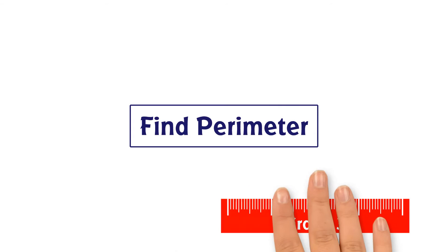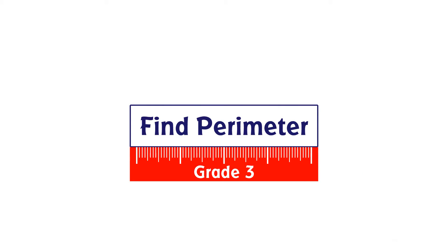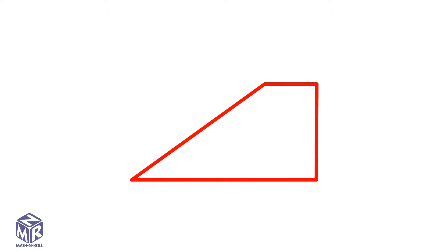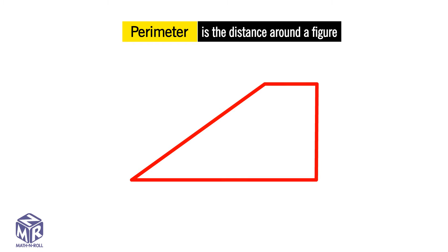Find Perimeter. Grade 3. How can we measure perimeter? As you already know, the perimeter is the shortest distance around a shape.